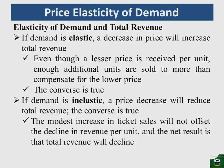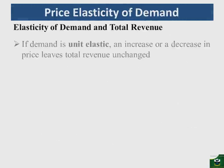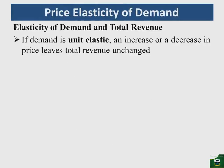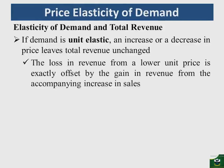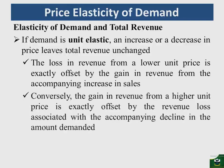In the case of unit elastic demand, an increase or a decrease in price leaves total revenue unchanged. The loss in revenue from a lower unit price is exactly offset by the gain in revenue from the accompanying increase in sales. Conversely, any gain in revenue from a higher unit price is exactly offset by the loss in revenue from the accompanying decline in units demanded.